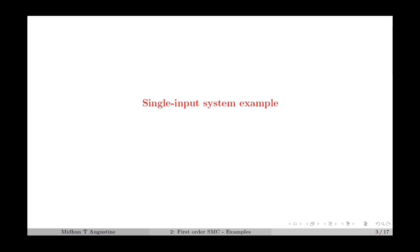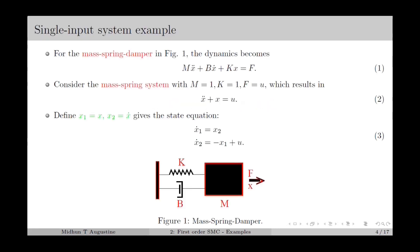In the single input system example, we are considering a mass-spring-damper system, which is a second order mechanical system. We consider the mass-spring-damper as given in figure 1, for which we can describe the dynamics using the force balance equation as in equation number 1, where m is the mass, b is the friction coefficient of the damper, and k is the spring constant. Here x is the position and f is the applied force.